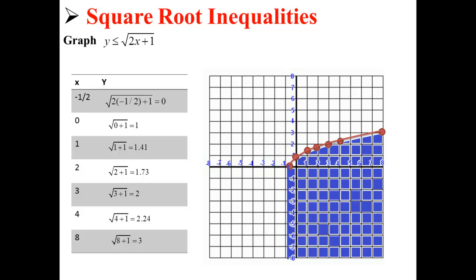Here, we've plotted all of our x, y coordinates. We've shaded the region below the red line because our solutions are all y less than or equal to that line. So, any point within this purple-shaded region is a valid solution to our square root inequality, y is less than or equal to the square root of 2x plus 1.